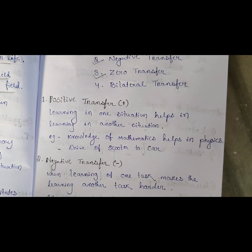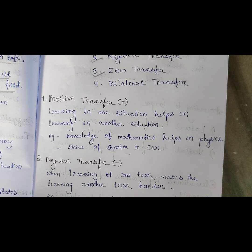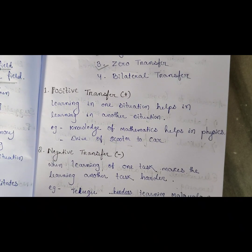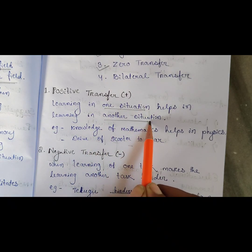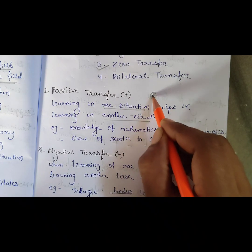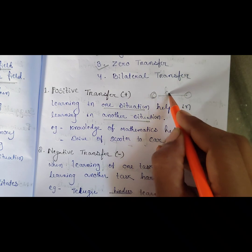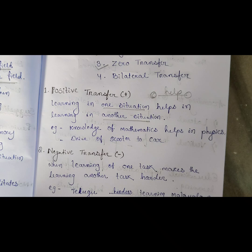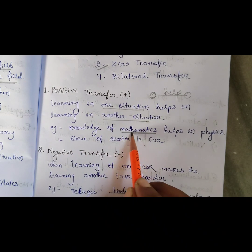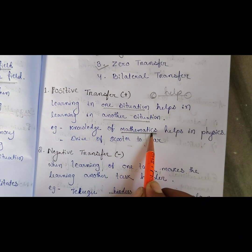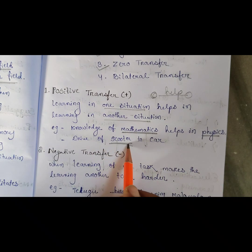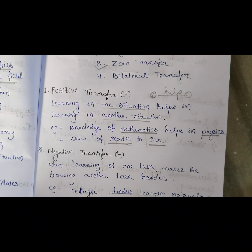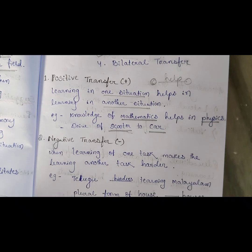Positive transfer — when learning in one situation helps in another situation, it is called positive transfer. For example, mathematics knowledge helps you in physics. If you know how to drive a scooter, it helps in car riding. Because there is a positive outcome, it is called positive transfer.